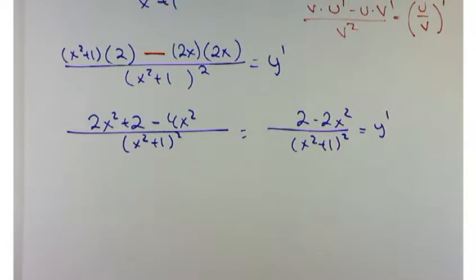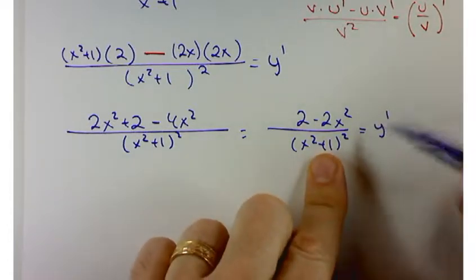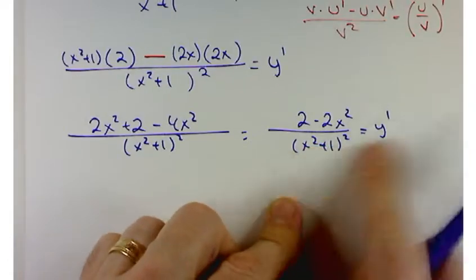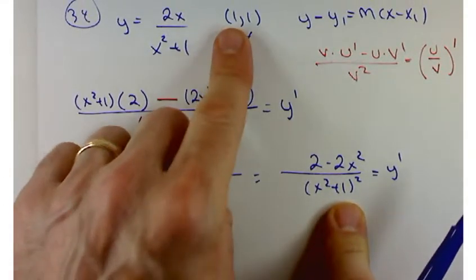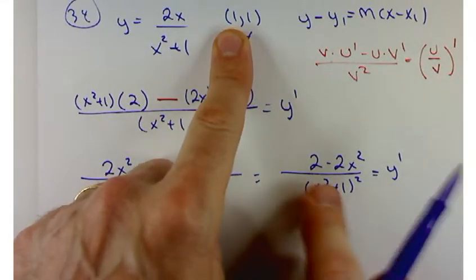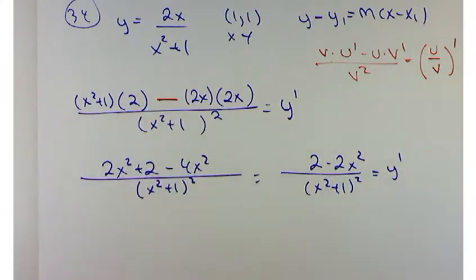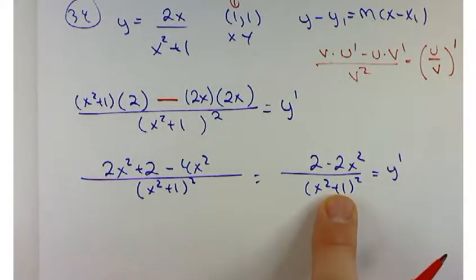What good is y prime going to be for us? What's that going to tell us? This is the slope of the tangent line at any point. You want to find the slope of the tangent line at any point? Just plug in that particular value in for x. No, no, no. This is the slope of the tangent line anywhere. If we want the slope of the tangent line at this point, then we plug in just the x value, right? Just the x value in here.